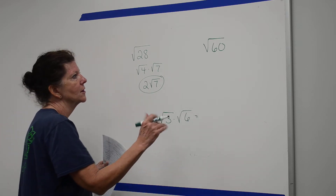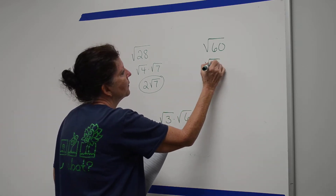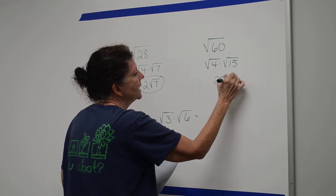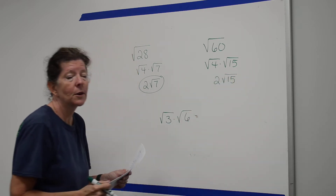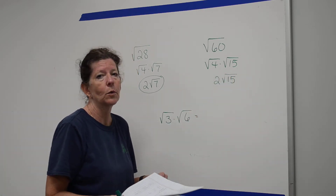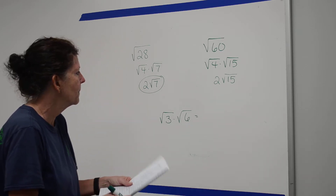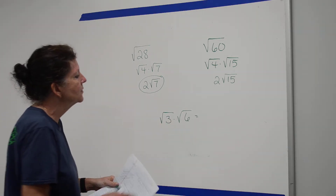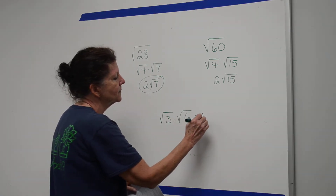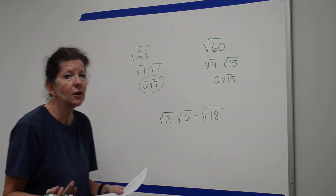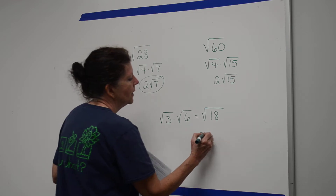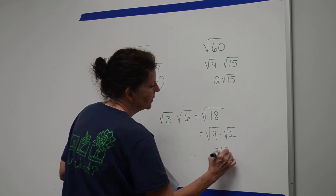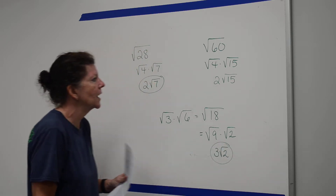This one is the square root of 4 times the square root of 15, so that's 2 on the square root of 15. Yes, 15 can be broken down to 3 times 5, but I can't take the square root of either one of those, so it doesn't help. Down here, I can't break either one down, so I multiply them to get the square root of 18. Then 18 can be broken down as the square root of 9 times the square root of 2, so that's 3 on the square root of 2.